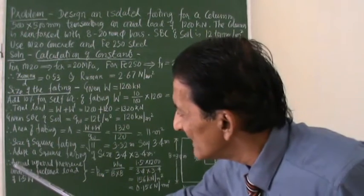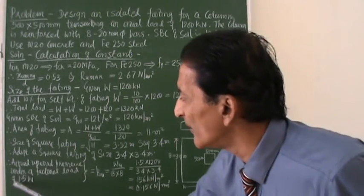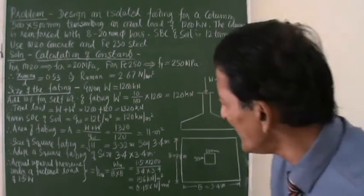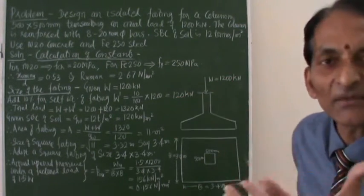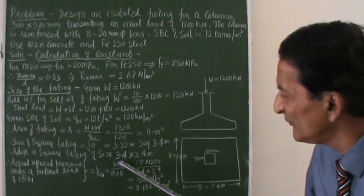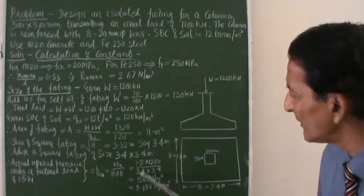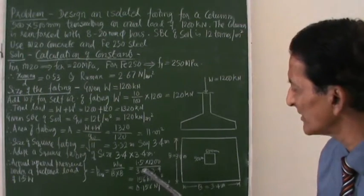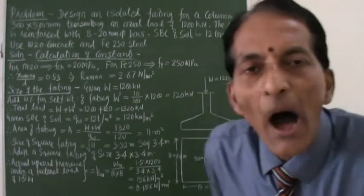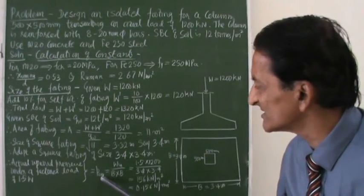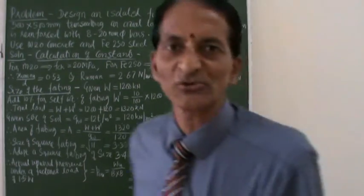The last step: now I have to calculate the actual upward pressure under a factor of 1.5W. I want to know how much is the upward thrust, ultimate PU. It is WU - that is 1.5 times W - divided by area. Area is 3.4 meter by 3.4 meter. This will give the ultimate upward thrust as 156 kilonewton per meter square. Thank you very much, we will stop it here.